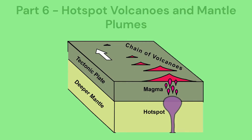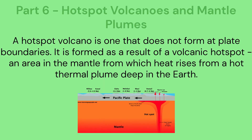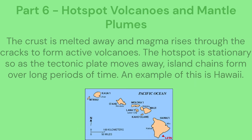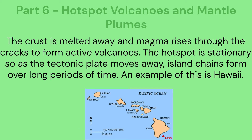Part 6: Hotspot volcanoes and mantle plumes. A hotspot volcano is one that does not form at plate boundaries. It is formed as a result of a volcanic hotspot — an area in the mantle from which heat rises from a hot thermal plume deep in the earth. The crust is melted away and magma rises through the cracks to form active volcanoes. The hotspot is stationary so as the tectonic plate moves away, island chains form over extended periods of time. An example of this is Hawaii, where the islands form in a chain leaving extinct volcanic islands behind the active one.